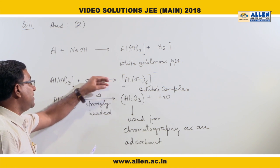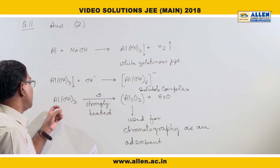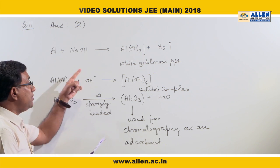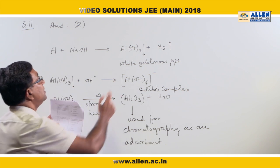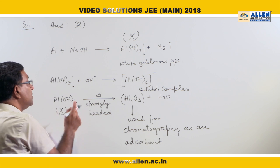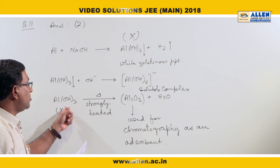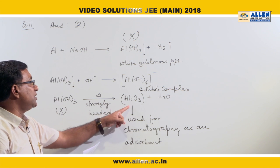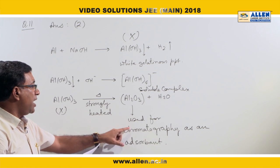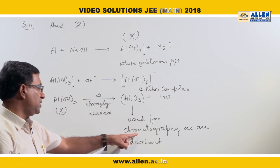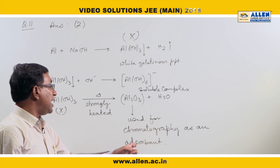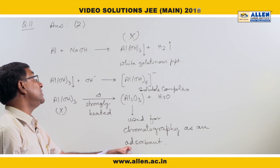Al(OH)₃ is the compound X. Whenever compound X is strongly heated, it produces Al₂O₃ as a product, which is used in chromatography as an adsorbent.